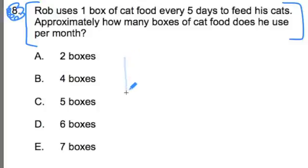So there's a box. One box of cat food. One box is equal to five days. Is that right? And I'm trying to find out how long it's going to take to approximately feed a cat, not just for five days, but for over a whole month.